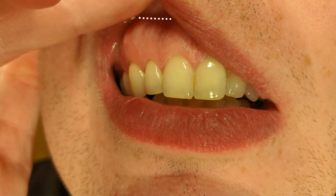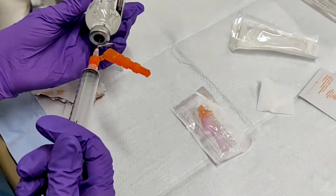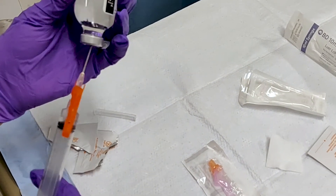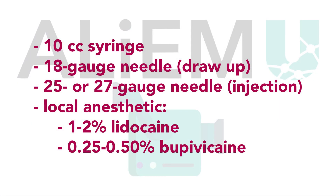The site of injection is the mucobuccal fold, where the tissue of the gums meets the tissue of the cheek and lip. The following items are needed to perform this block: a 10cc syringe, an 18 gauge needle to draw up the anesthetic, and a 25 or 27 gauge needle to inject the anesthetic. Lidocaine or bupivacaine can be used; bupivacaine will last many hours longer than lidocaine, and for this reason may be desirable.